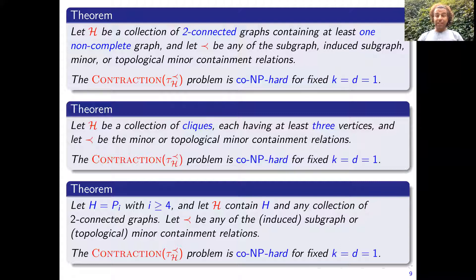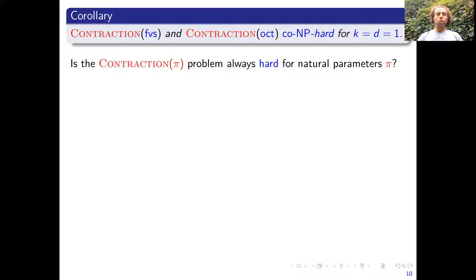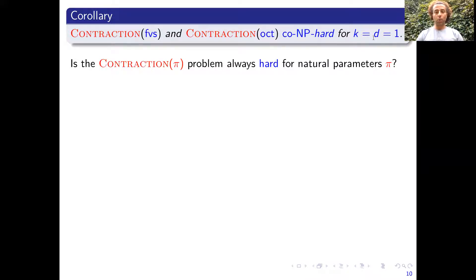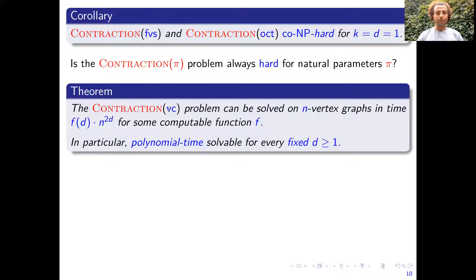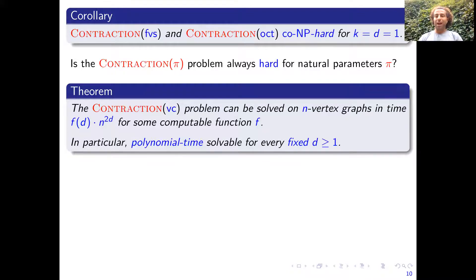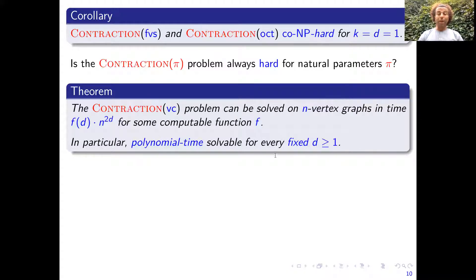On the positive side: we have that contraction for feedback vertex set and odd cycle transversal are hard for fixed k equal d equal one. The natural question is whether this problem is always hard for natural parameters pi. For vertex cover the situation changes completely — we prove that the problem can be solved in time, a function of d times n to the power 2d. So in particular for every fixed d we have a polynomial time algorithm. This is in sharp contrast with the feedback vertex set and odd cycle transversal cases.